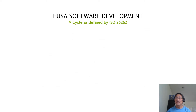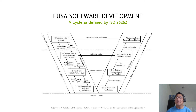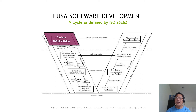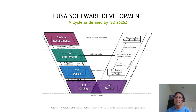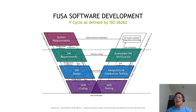Software development is defined as a V-cycle in ISO 26262. It starts with system requirements, decomposes into software requirements, software design, unit coding, unit testing, integration and integration testing, embedded software, and system verification.